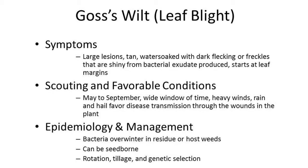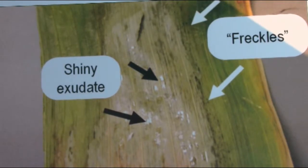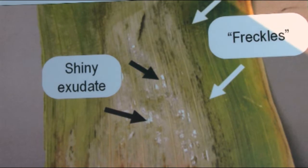As far as some management tactics against Goss's wilt: this is a bacterial disease that does overwinter in residue, along with a pretty good-sized list of host weeds. This disease can also be seed-borne. Probably the number one management tactic would be rotation and tillage. Tillage can really have an effect on the inoculum of the residue in the soil, along with rotation to soybean, as soybeans cannot contract Goss's wilt. Also, genetic selection plays a big part in management, as most hybrids have ratings against Goss's wilt. Being that this is a bacterial disease, fungicides will not help in the management of Goss's wilt.